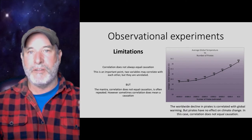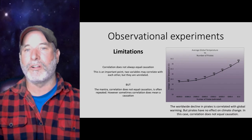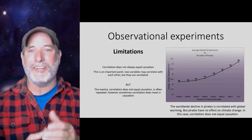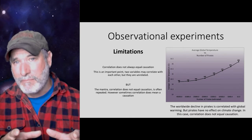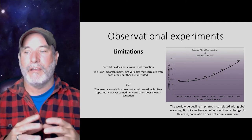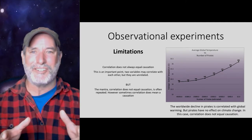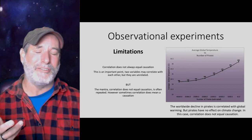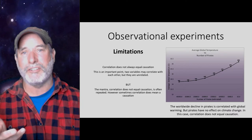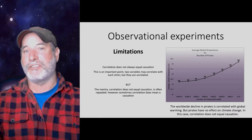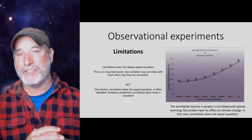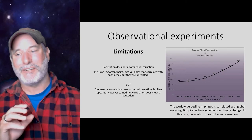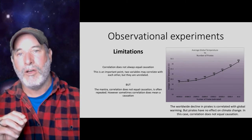There are limitations to observational studies because you're not controlling all the variables — you get what is called a correlation. As any first-year statistics student will tell you, correlation does not equal causation, and most of the time they're correct. Here's an example: the number of pirates in the world has gone down as global temperatures have increased — they're correlated, but pirates have nothing to do with climate change. That's a correlation without causation.